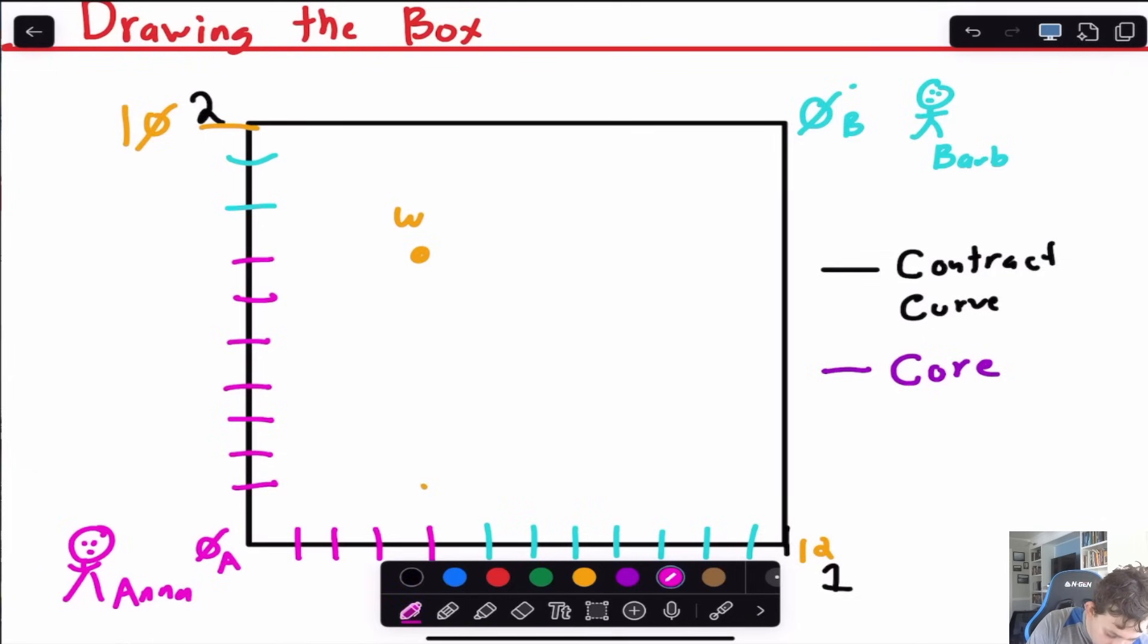This is my indifference curve for Anna. Because she has 4 of X and X equals Y, if she only has 4 of X, she doesn't care if she has more than 4 of good Y. Similarly, if she has more than 4X but only 4Y, then she is only going to be just as happy as if she had 4 of each. So here's the indifference curve for Anna.